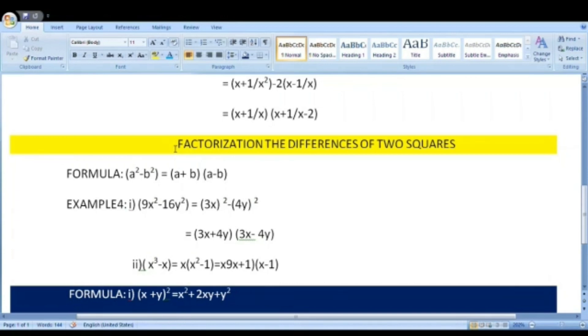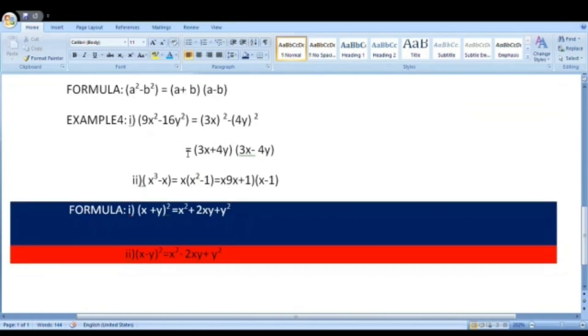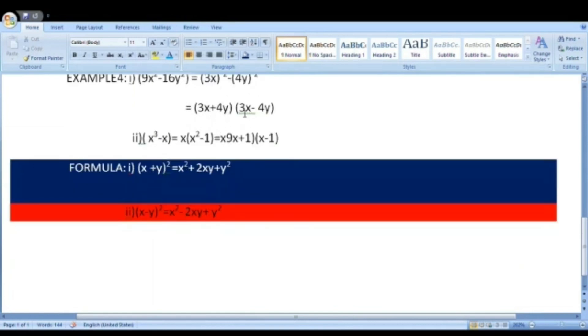Moving on to the last method of factorization. This is a formula: a²x² - b²x² = (a + b)(a - b). Example: 9x² - 16y² = (3x)² - (4y)². See here, 9x² is equal to (3x + 4y)(3x - 4y).